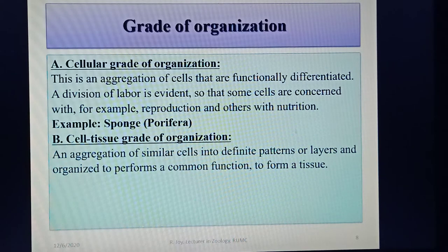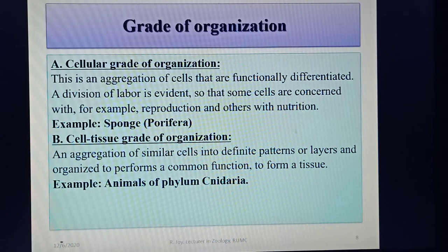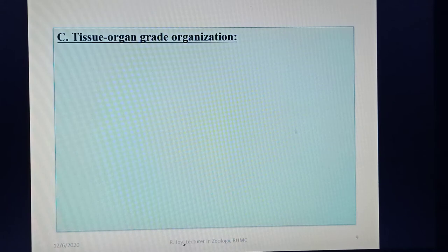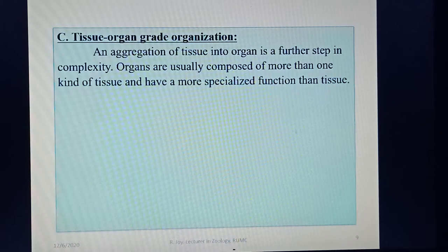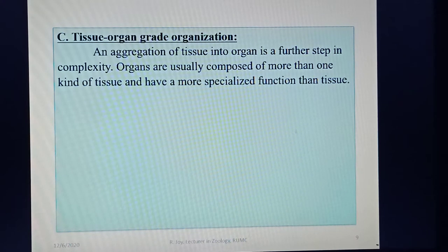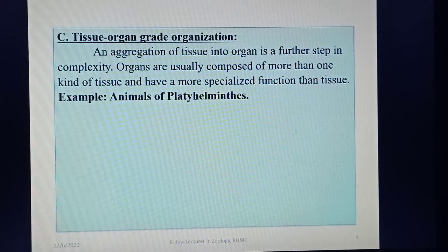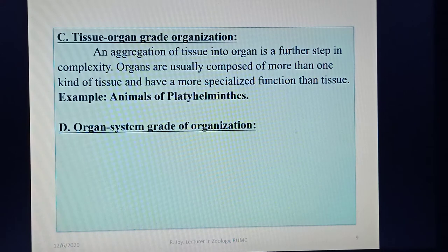Secondly, cell-tissue grade of organization: an aggregation of similar cells into definite patterns or layers organized to perform a common function, forming a tissue. Example: animals of phylum Cnidaria. Thirdly, tissue-organ grade of organization: an aggregation of tissues into organs is a further step of complexity. Organs are composed of more than one kind of tissue and have a more specialized function. Example: animals belonging to phylum Platyhelminthes.